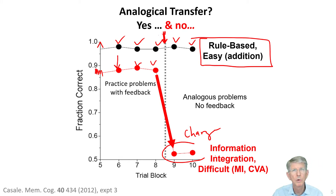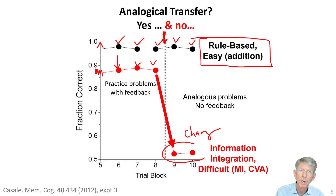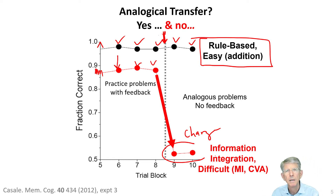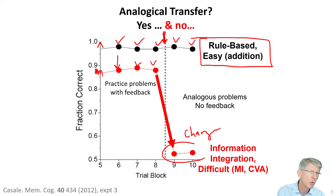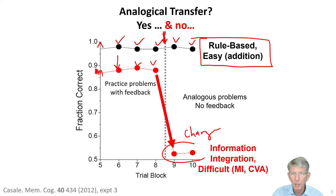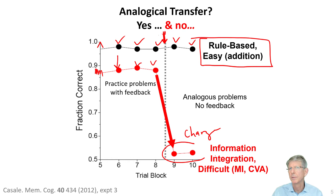Now a thrombotic stroke or a cerebrovascular accident has a radically different surface structure — people suddenly can't talk, they might become unable to move a part of their body. But the deep structure is identical: atherosclerosis, plaque rupture, limitation of blood flow, downstream ischemia to the organ of interest — in this case the brain — causing a whole new set of symptoms. So the surface structure is radically different, deep structure identical. If you can understand one, you can understand the other. But surface structure gets in the way of understanding the other process quite a lot. If you understood a myocardial infarction, it wouldn't do you very much good to understand why someone had stroke symptoms, unless you understood the deep structure.